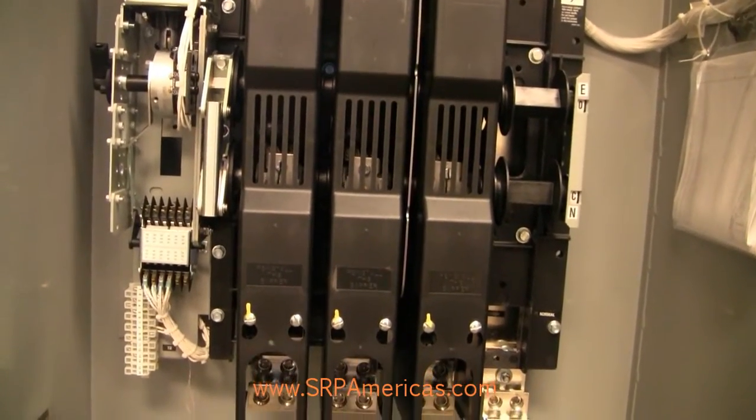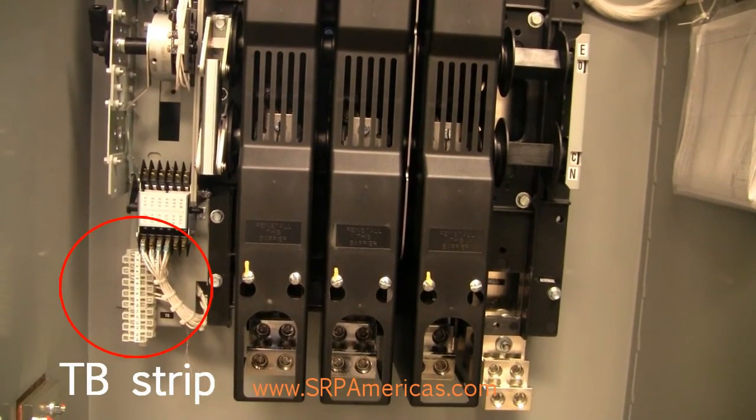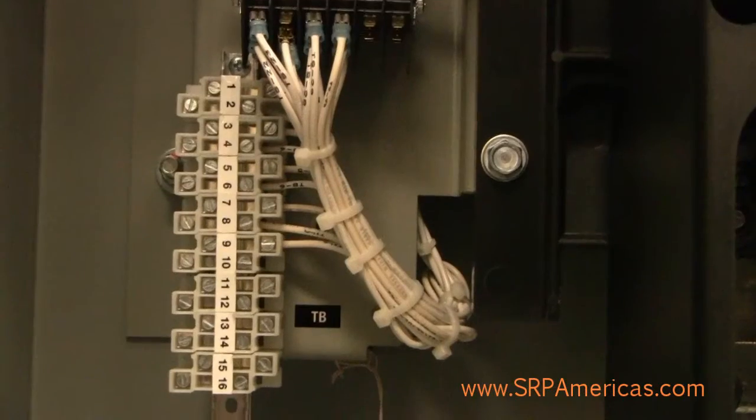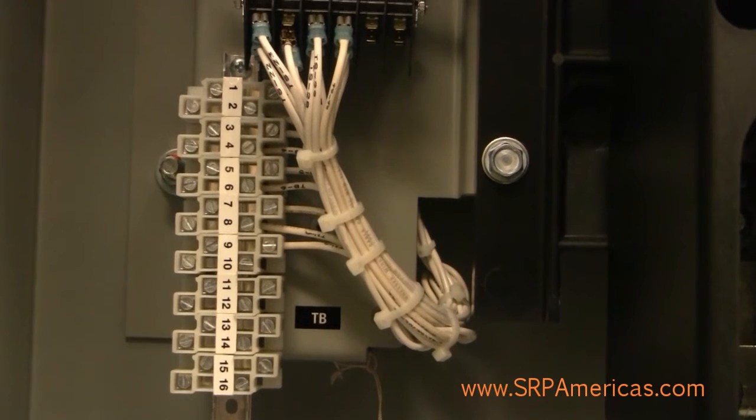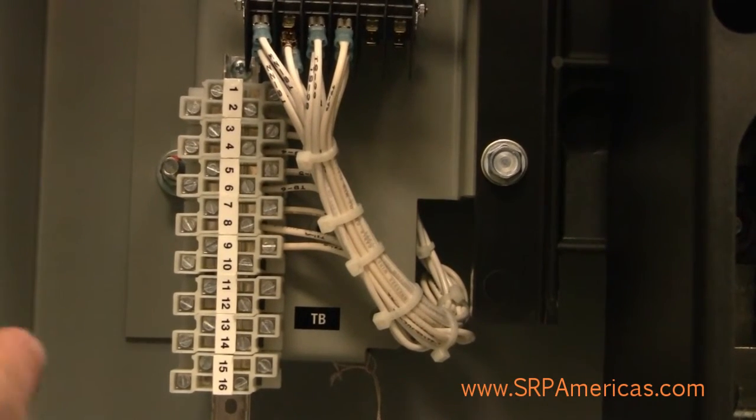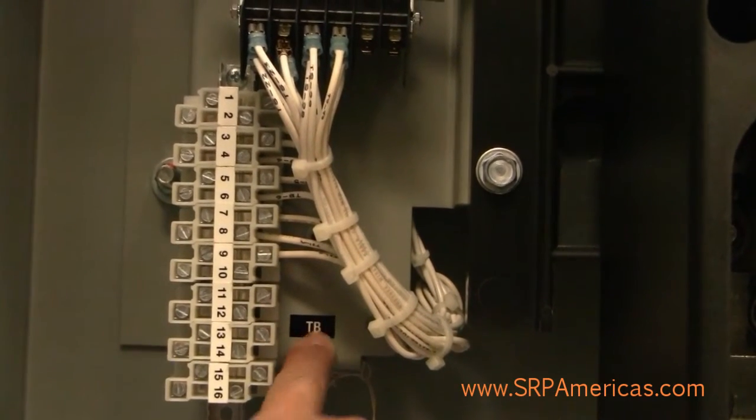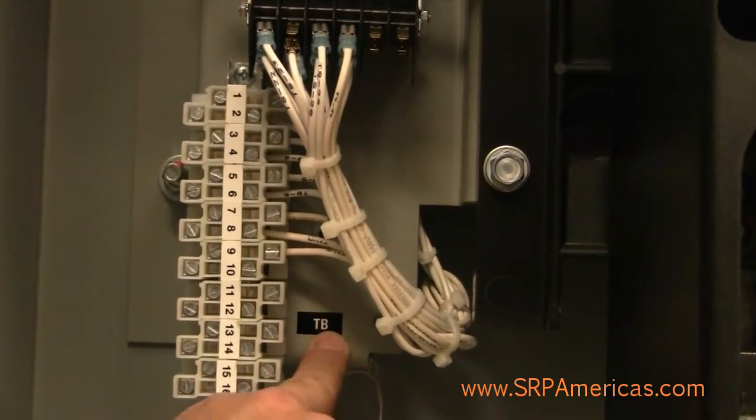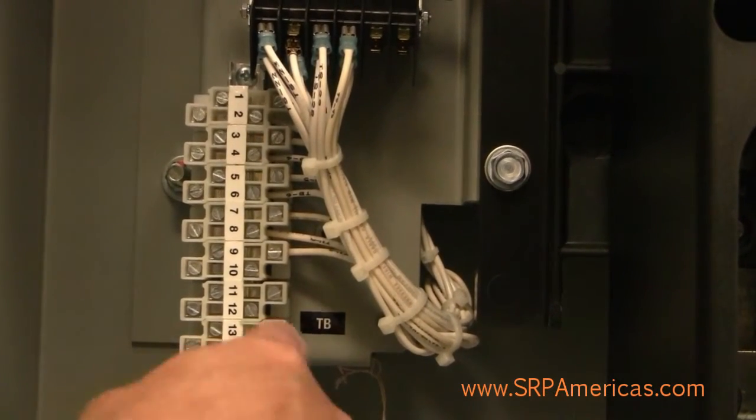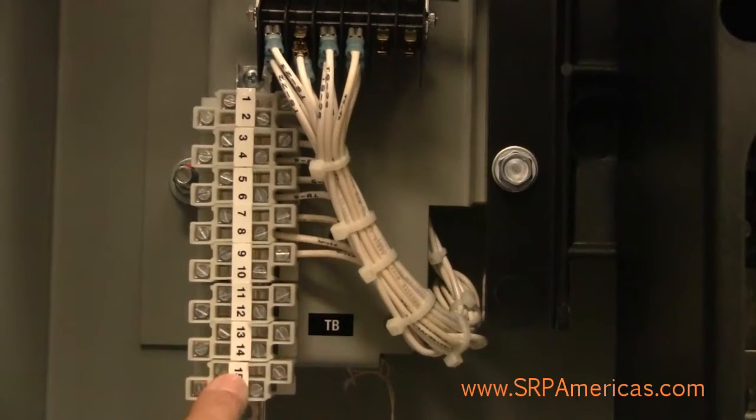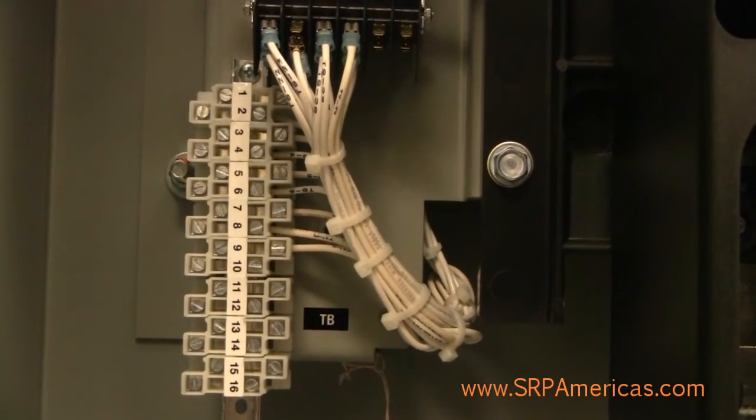Once we get inside the transfer switch, we're going to find the TB connection strip, the terminal strip. It'll be labeled TB and then it'll be labeled in sequential numbers, and the ones that we're looking for...